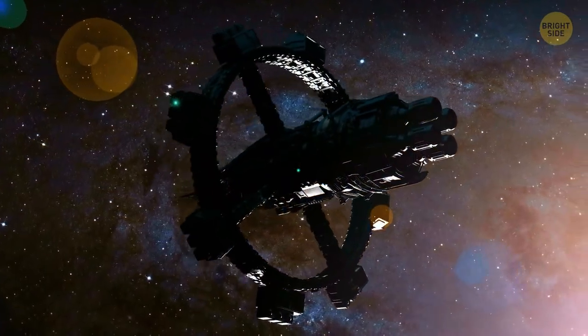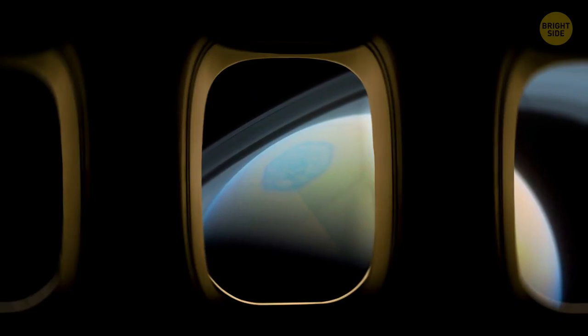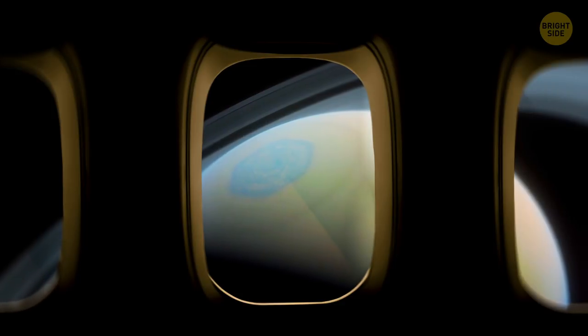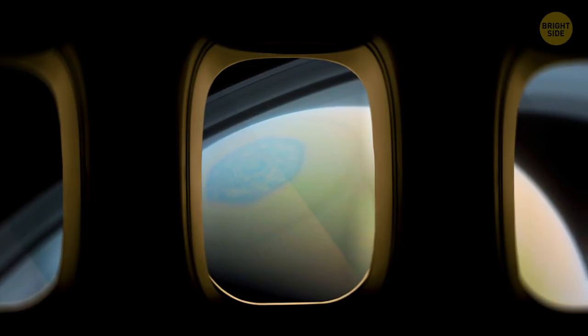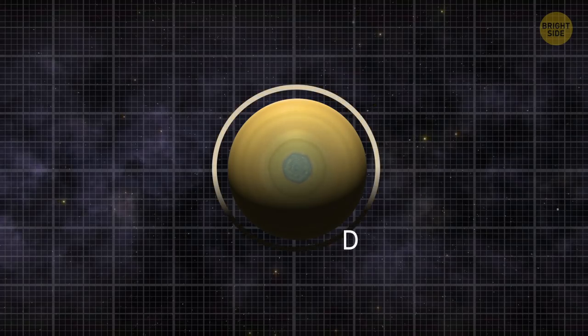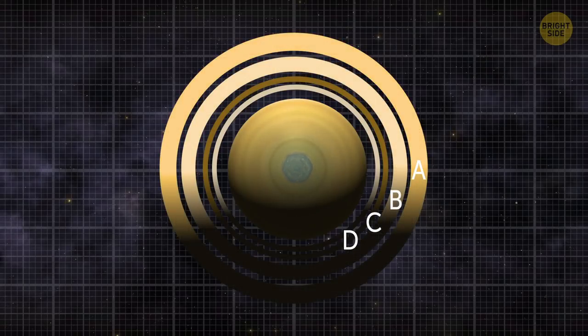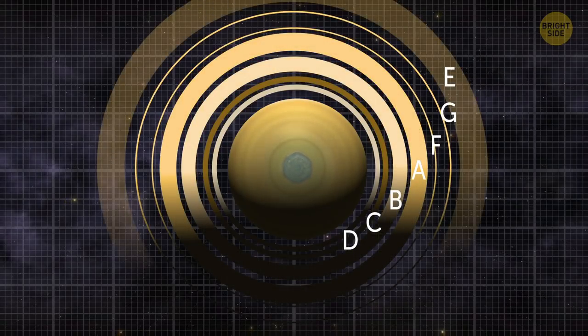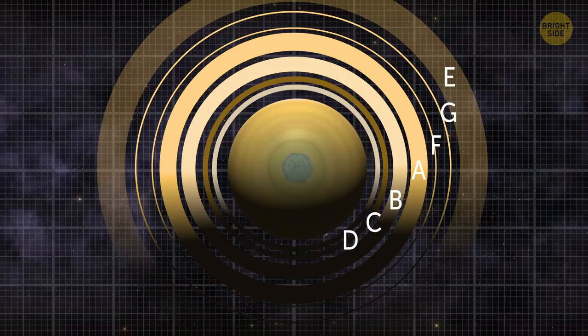Saturn's rings weren't discovered all at once. It happened gradually, and they were named alphabetically based on the time scientists found them. They go like this: D-C-B-A-F-G-E, which of course spells Dickboffke.